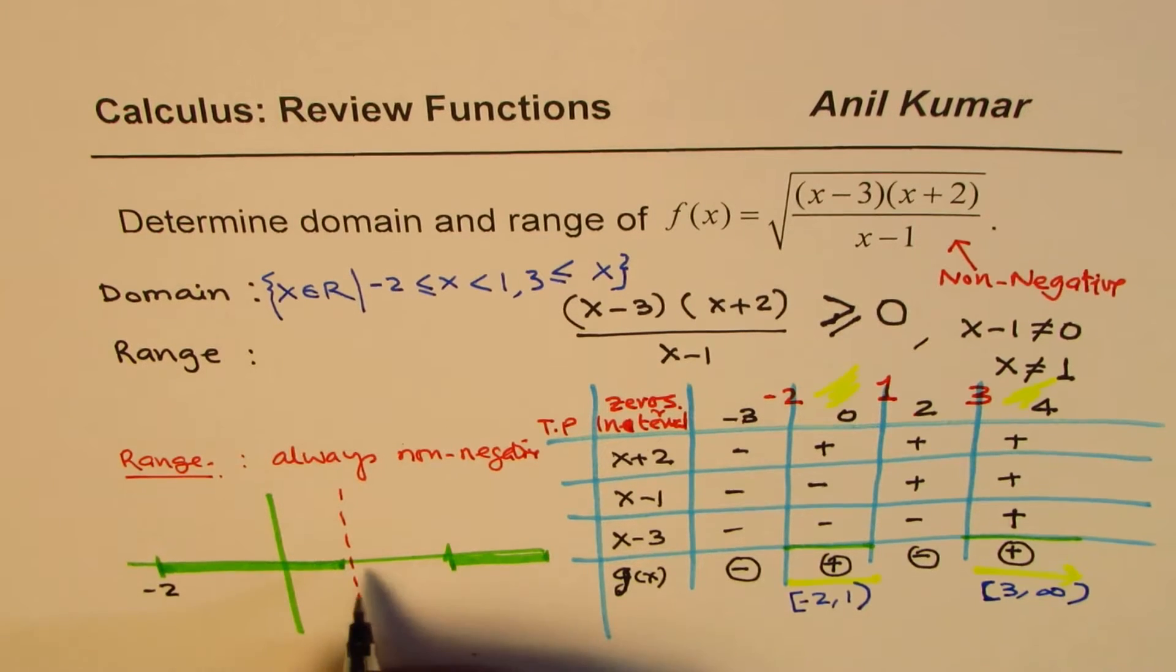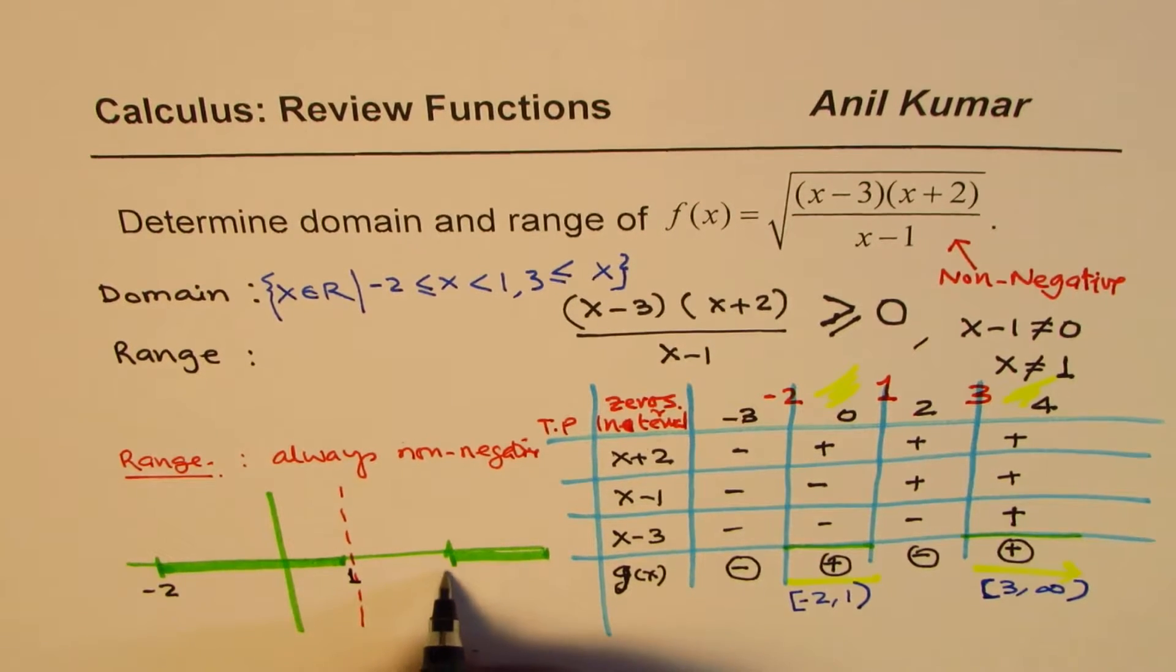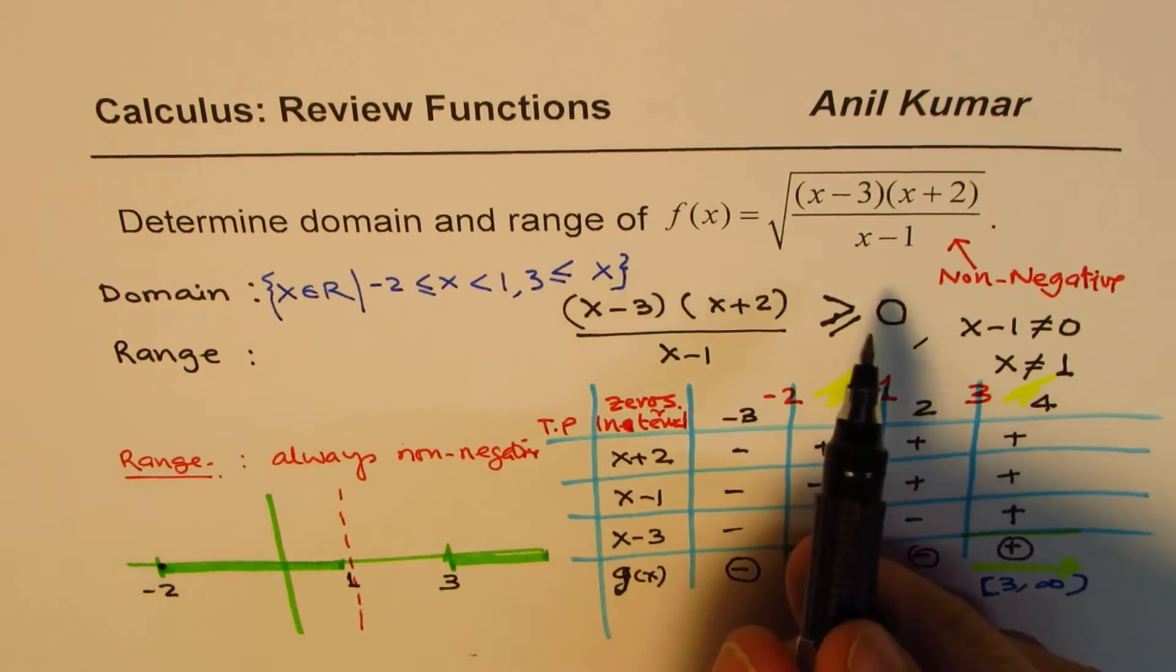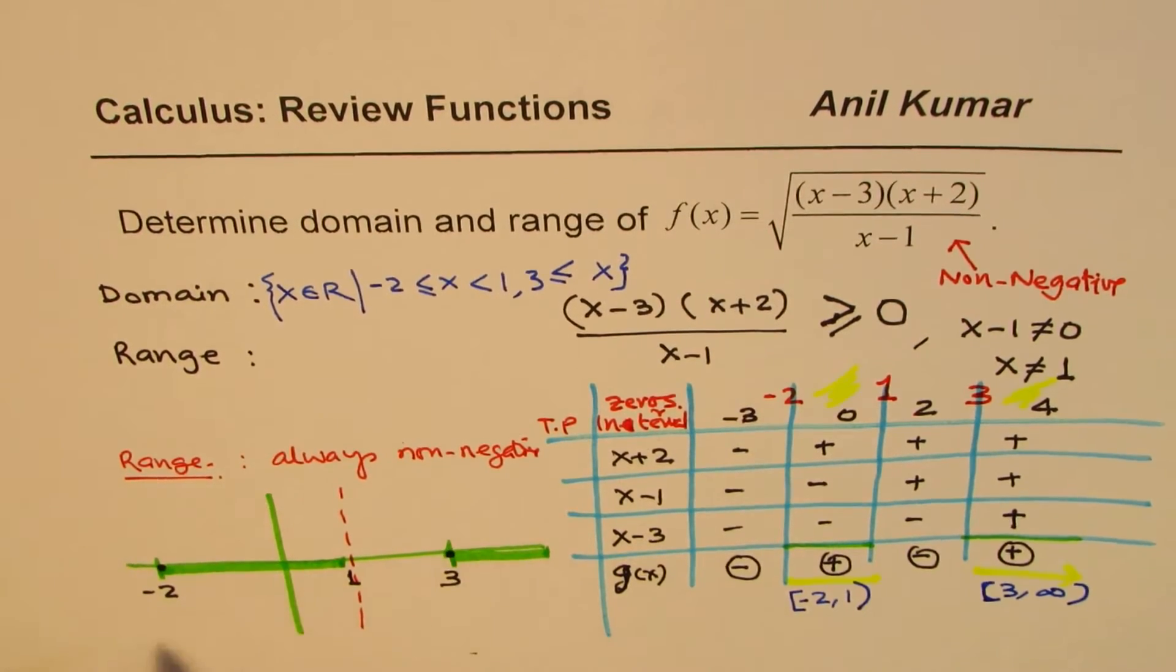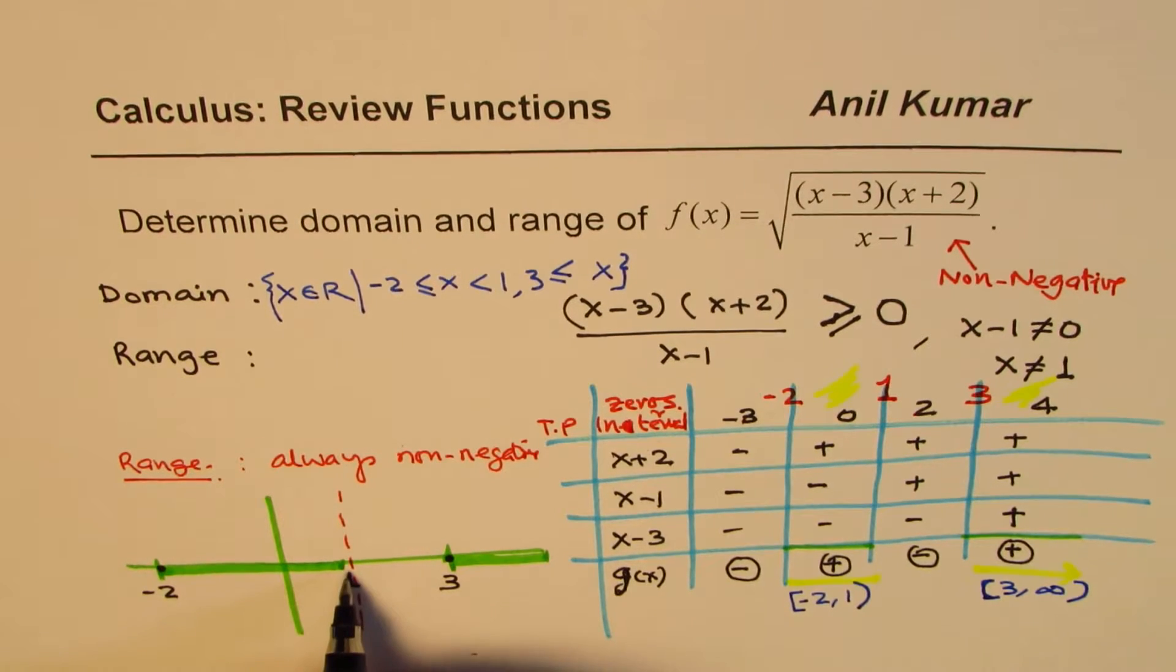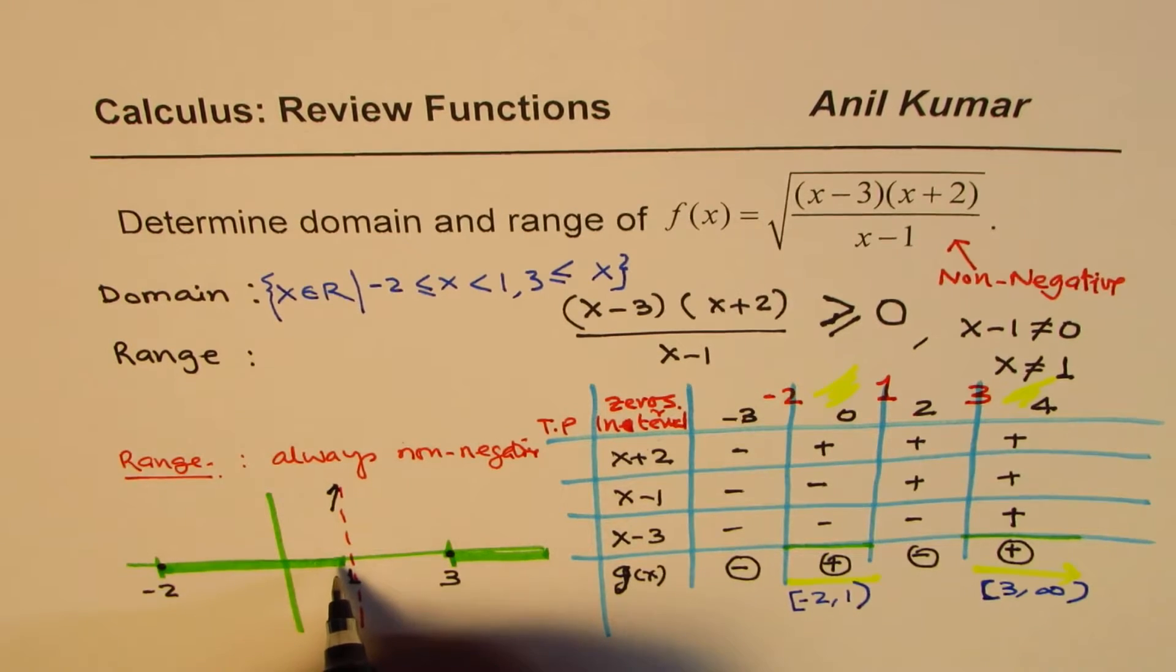So, 1 is minus 2. Then, here we have 1. And then, we have 3. If I write minus 2, I get a 0. If I write 3, I get a 0. So, 0 is included. Perfect. At 1, we know it is an asymptote. And since the denominator is 0, it is going to point upwards. Infinite asymptote.